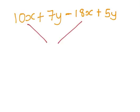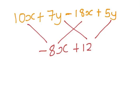We put the x's together first. 10 minus 18 which is minus 8x. And then we merge the 7 and the 5. 7 plus 5 is plus 12. So we would have plus 12y.